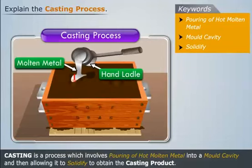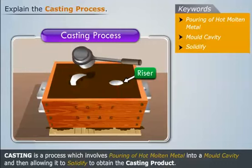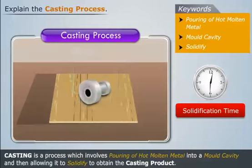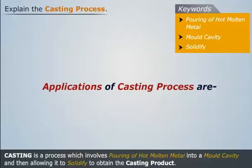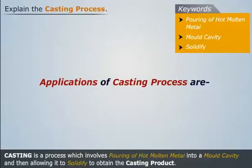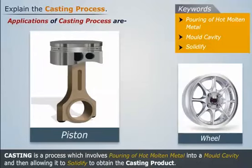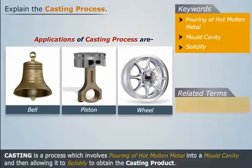Now with the help of the hand ladle, keep pouring the molten metal in the pouring basin till the molten metal reaches the edge of the riser. Now allow the molten metal to solidify in the mold. Then take the material out of the mold — we get the casting product. Some of the common products obtained through casting are wheels, pistons, bells, etc.